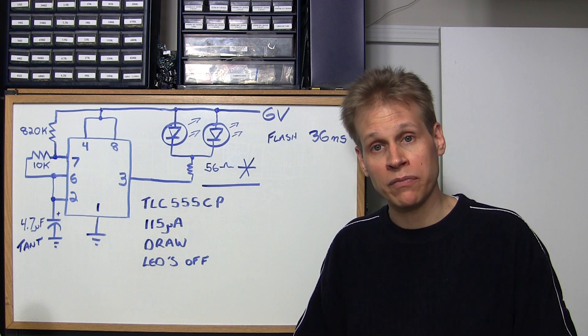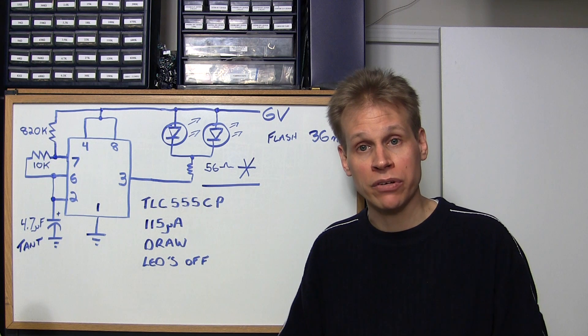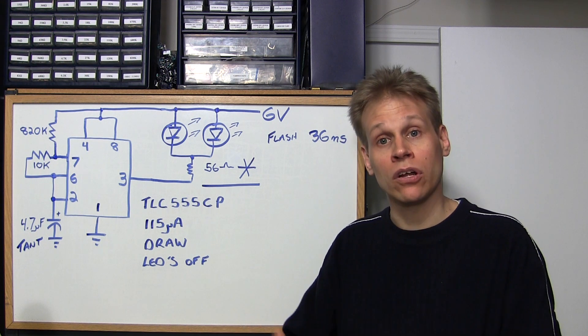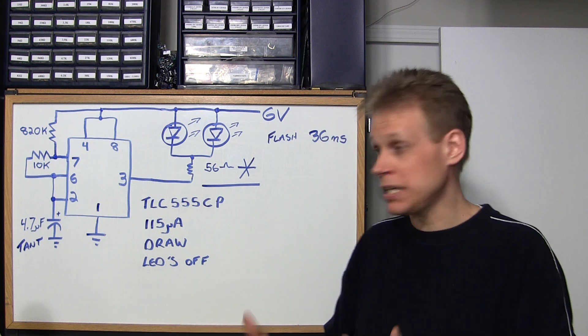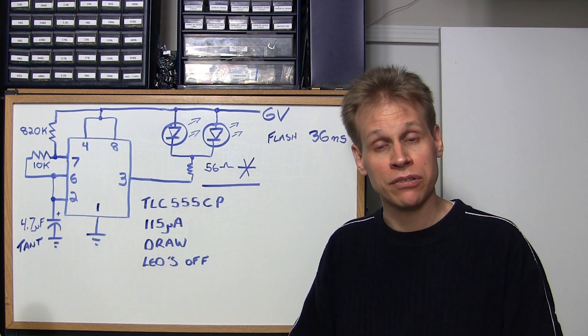Especially when you're dealing with watch batteries like CR2032's. You got to remember that this thing is off longer than it's on, so we need to keep this current down to a minimum so that those batteries don't deplete too fast.